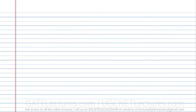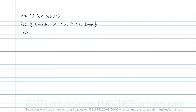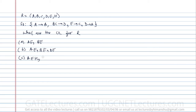The next question gives relation R with attributes A, B, C, D, E, H, and functional dependencies: A determines B, BC determines D, E determines C, and D determines A. They ask for the candidate keys. Option A is {AE, BE}; option B is {AE, BE, DE}; option C is {AEH, BEH, BCH}; option D is {AEH, BEH, DEH}.